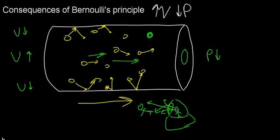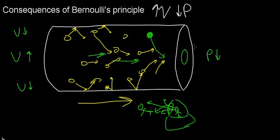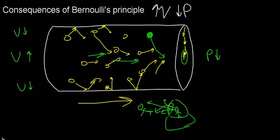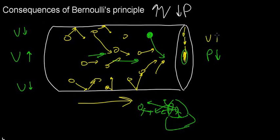That also means that if there's a particle here and there's lower pressure in the center, it's going to want to get to that lower pressure. So each of these particles is going to be attracted to the center of the tube, which means that in the center of the tube we're going to have more particles. The closer to the middle, the higher the velocity, the lower the pressure, and the more particles of fluid.